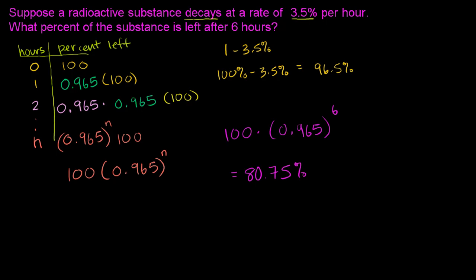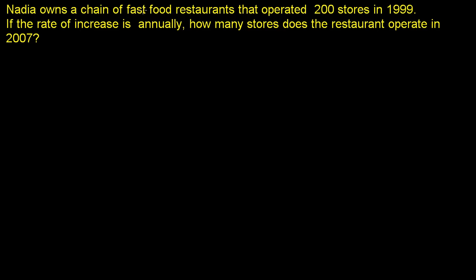Let's do another one of these. So we have Nadia owns a chain of fast food restaurants that operated 200 stores in 1999. If the rate of increase is 8% annually, how many stores does the restaurant operate in 2007? So let's think about the same thing. In 1999, so let's say years after 1999. And let's talk about how many stores Nadia is operating, her fast food chain. So 1999 itself is 0 years after 1999. And she is operating 200 stores.